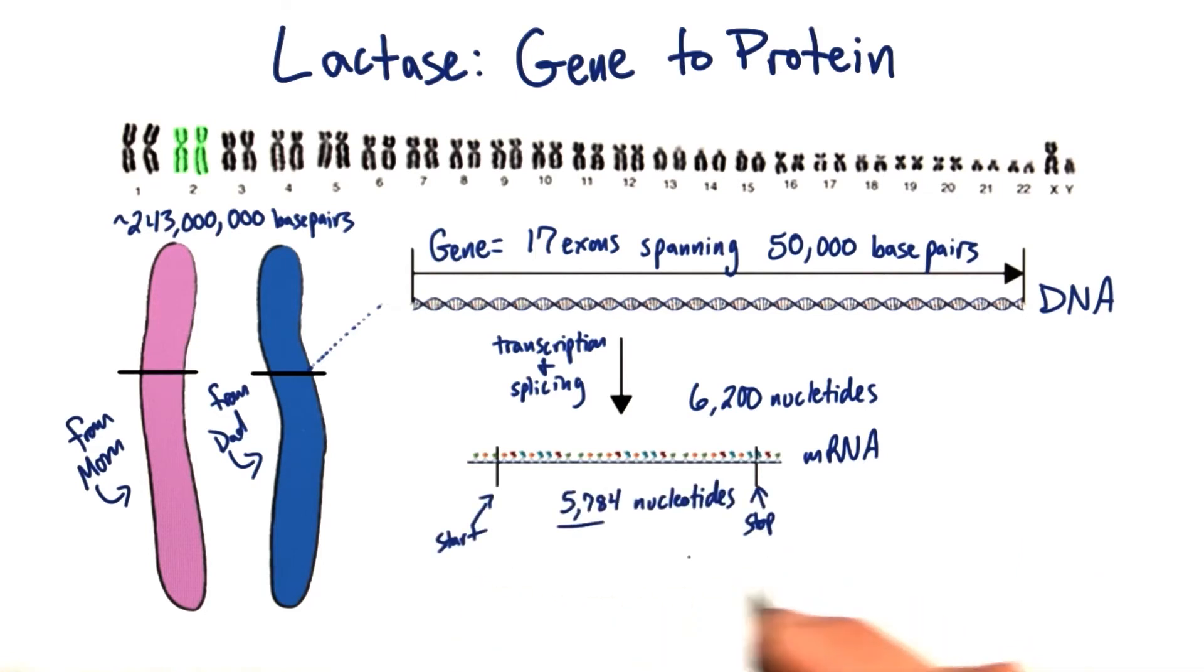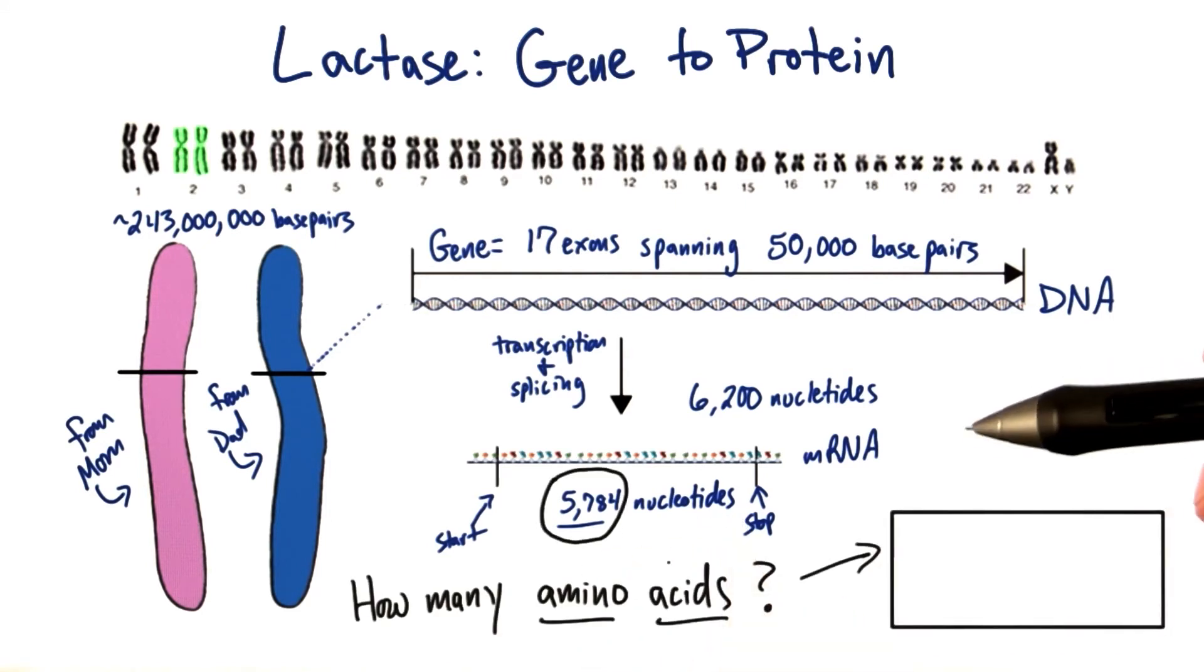Now if we take a look at that lactase mRNA, we'll see that between the start and the stop codon, including the start and stop codon, we have 5,784 nucleotides of information. Now based on what you've learned so far, I want you to tell me how many amino acids will be translated by a ribosome using this mRNA sequence here.